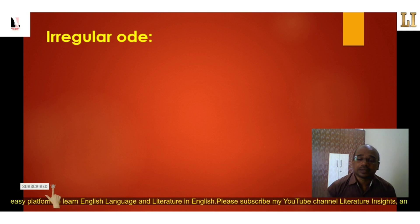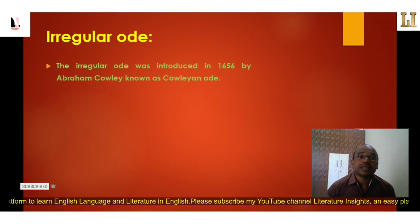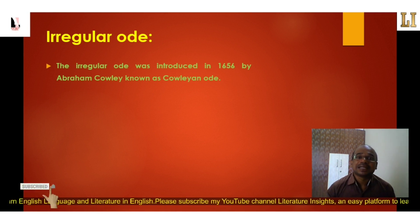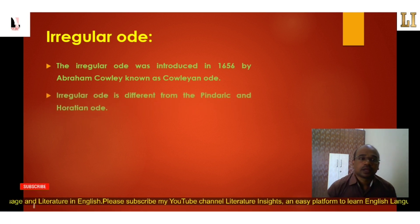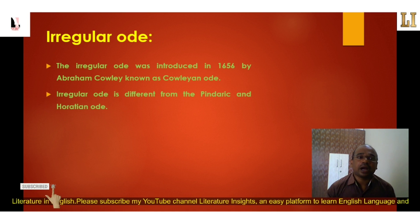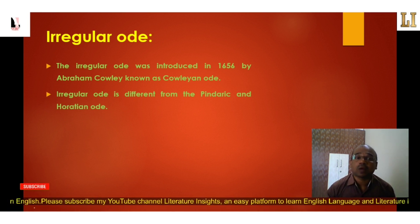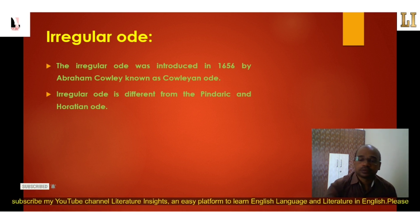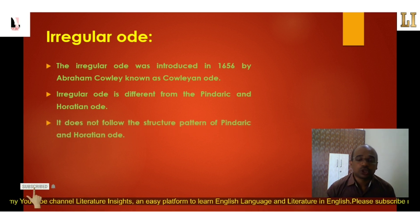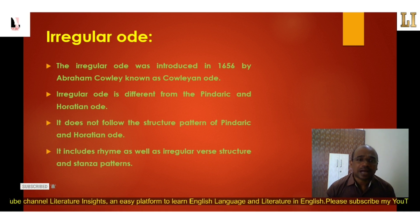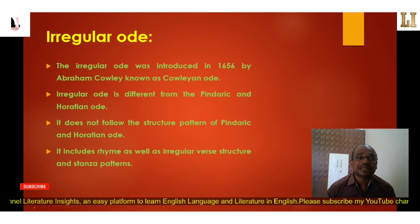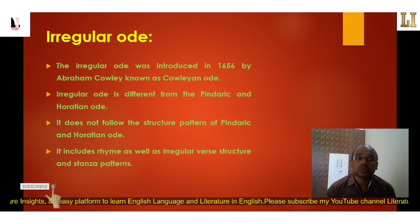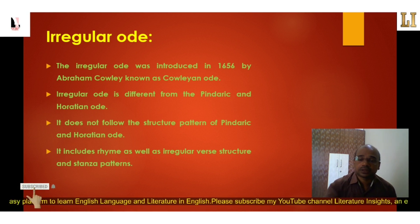The third and most recent type is the irregular ode, introduced in 1656 by Abraham Cowley — also known as the Cowleian ode. The irregular ode is free from all the restrictions and conventions found in the Pindaric and Horatian odes. It does not follow their structured patterns; instead, it includes rhyme as well as irregular verse structure and stanza patterns, making it a free-form type of ode.